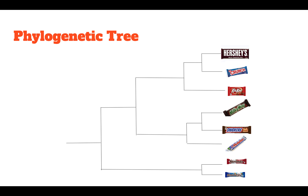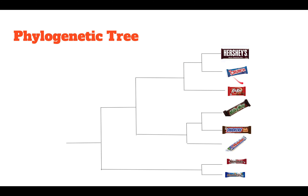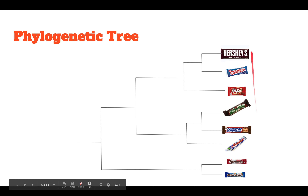We can see that this is a rooted tree — we have this common ancestor back here. It's also an example of cladogenesis, where we see that it branches off, versus anagenesis, where it would be just linear, which might have happened back here at this common ancestor to all of these chocolate bars.